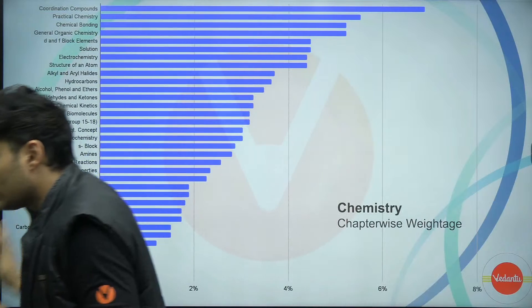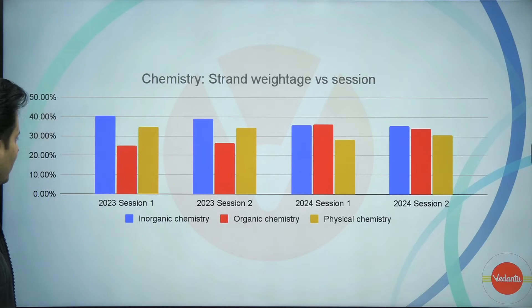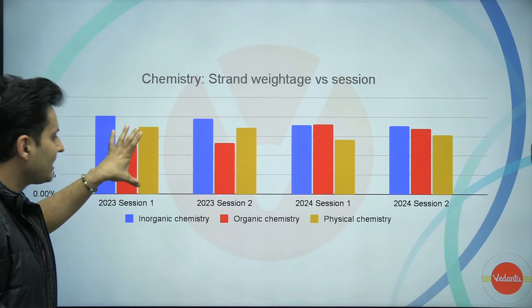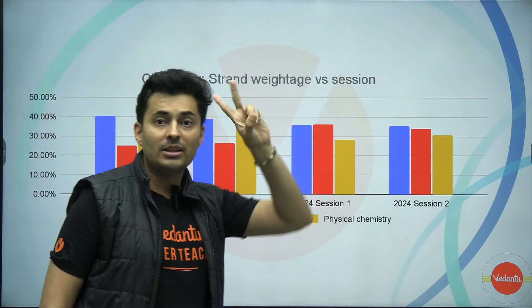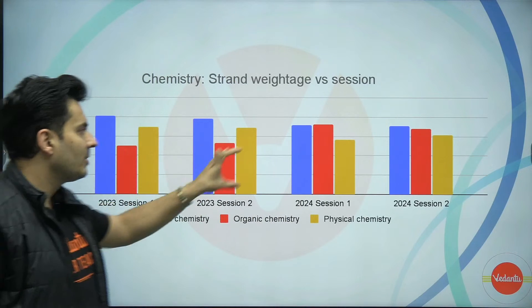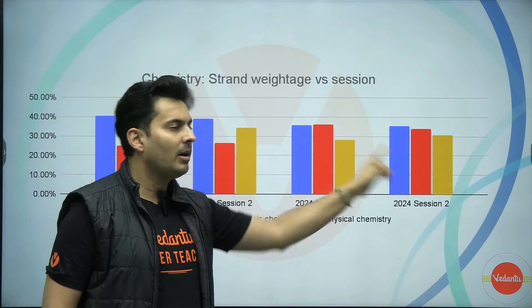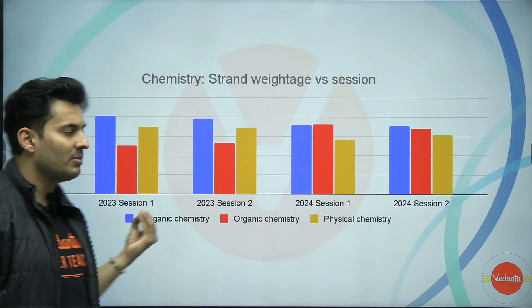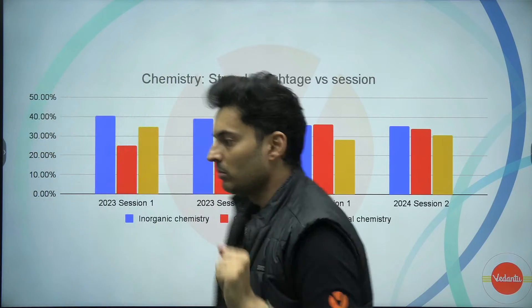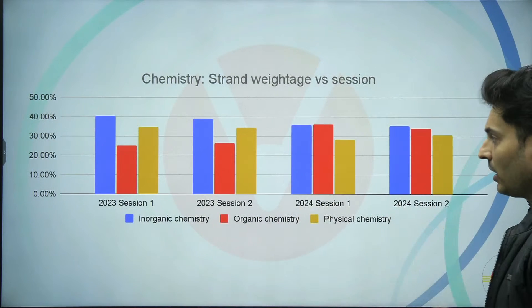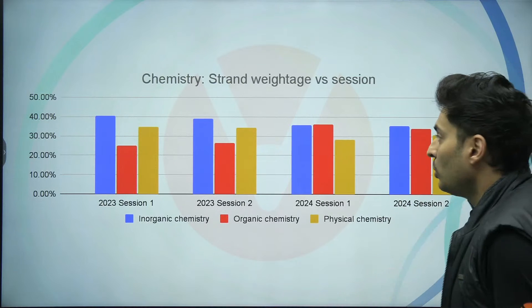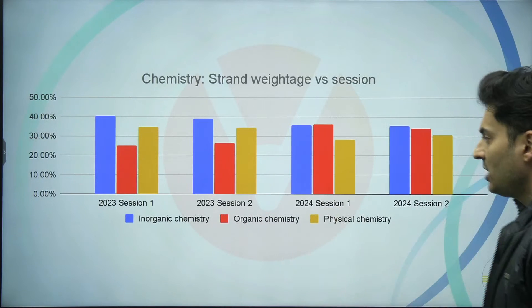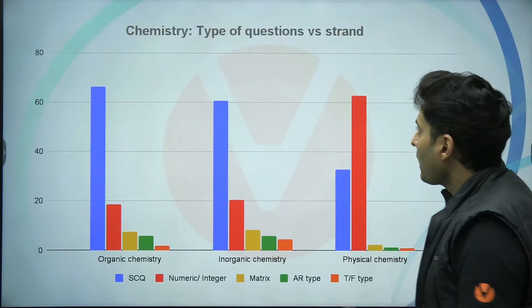Inorganic chemistry has always been the most important. Physical chemistry is the second most important, and organic chemistry has been the least important — but organic suddenly picked up in 2024, going up to 35% weightage from 25%. The most important is clearly inorganic, which many students tend to leave. Don't leave inorganic chemistry at any cost, and don't just concentrate on organic or physical thinking that alone will save you — one part of chemistry will definitely not be enough.